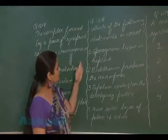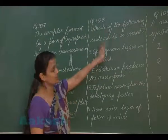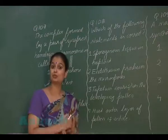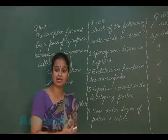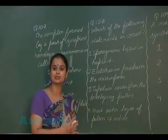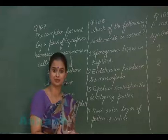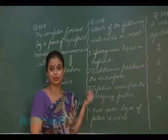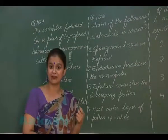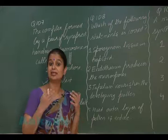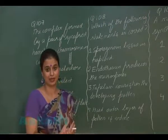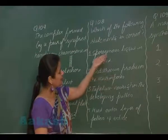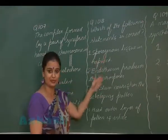Question 108 asks which statements are correct. The first option states sporogenous tissue is haploid — this is wrong; sporogenous tissue is diploid, and after meiosis it results in the formation of spores. The second option states endothecium produces microspores — this is also wrong. Endothecium is a wall layer of the anther that helps in dehiscence. Microspores are formed by the sporogenous tissue.